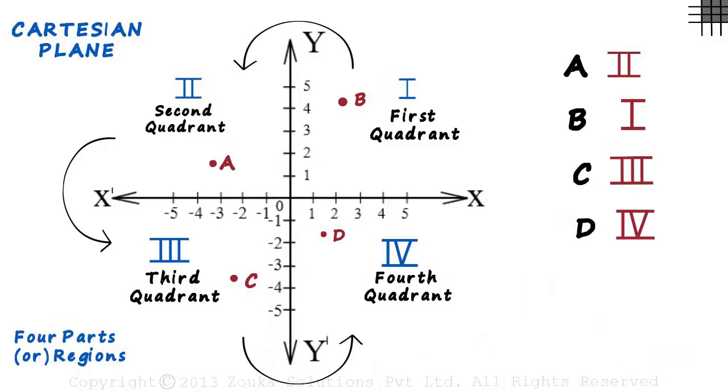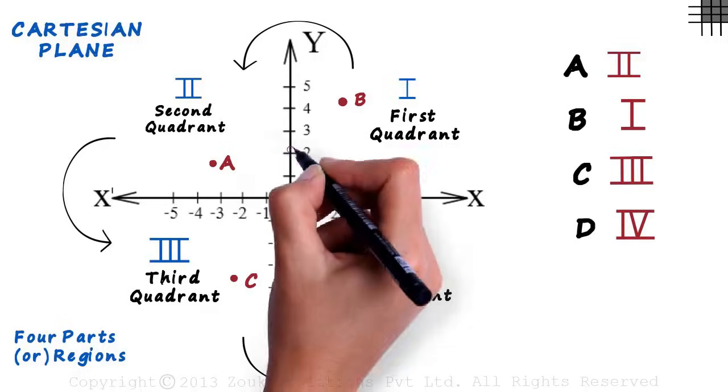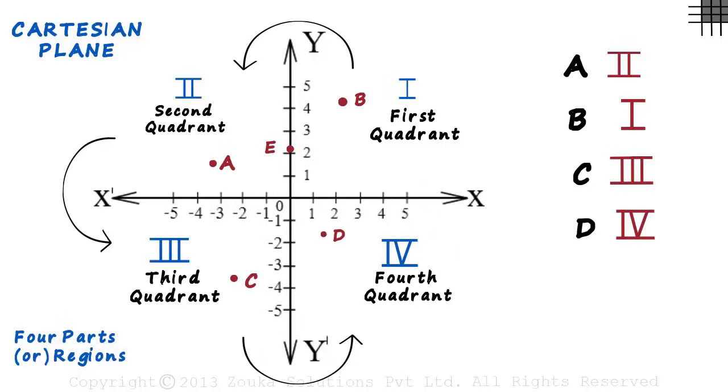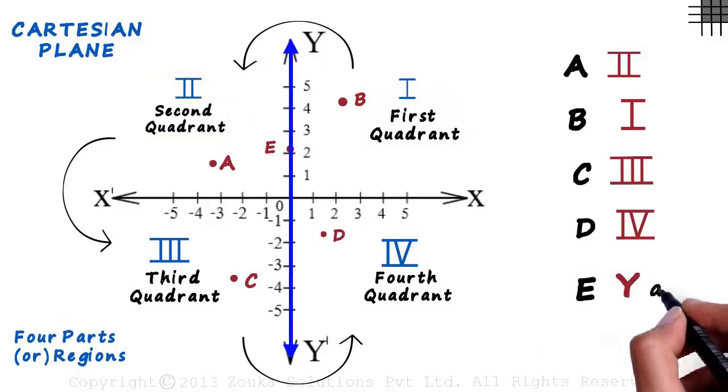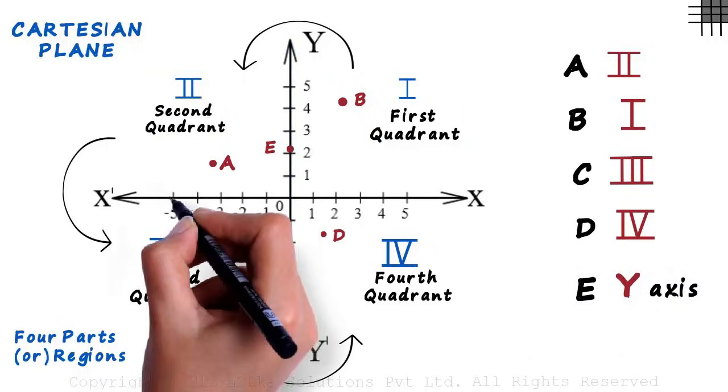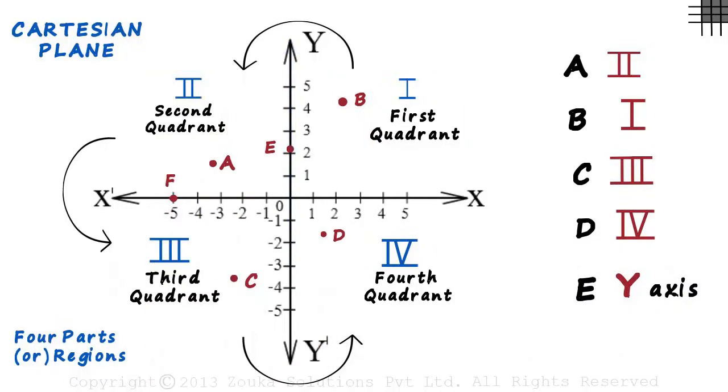Now let's look at something interesting. What about this point E? Which quadrant does it lie in? First quadrant or the second one? We say that point E lies on the Y axis. What about point F here? Yes, point F lies on the X axis.